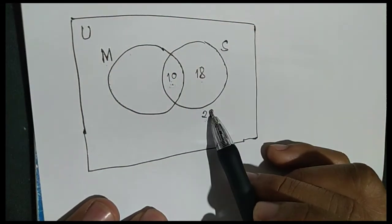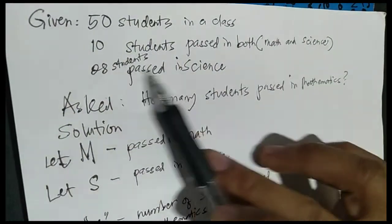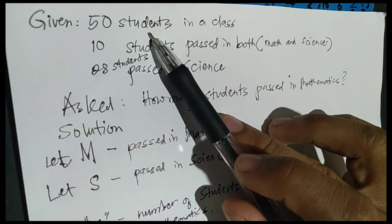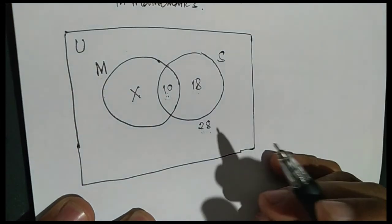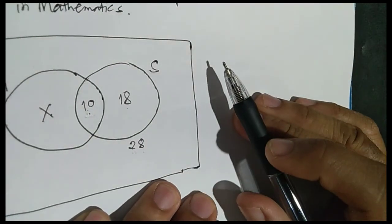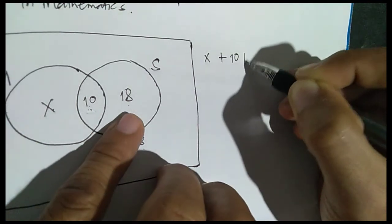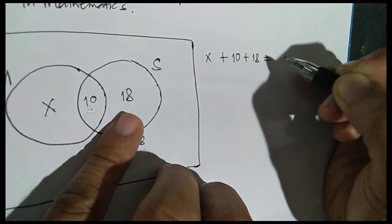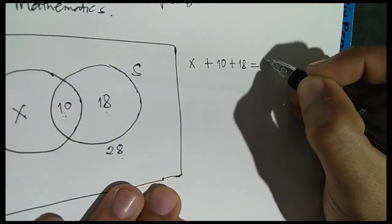Now, how about for math? How many students passed math? From our given, there is no given number for those who passed math. So we let X be the number of students who passed in math, and we place X inside that circle. From the diagram, we add X plus 10 plus 18 equals the total number of students. Remember, from our given, there are 50 students in the class. So X plus 10 plus 18 is equal to 50.